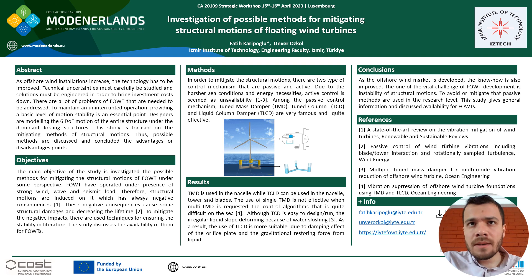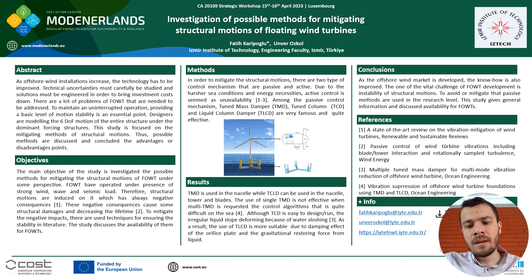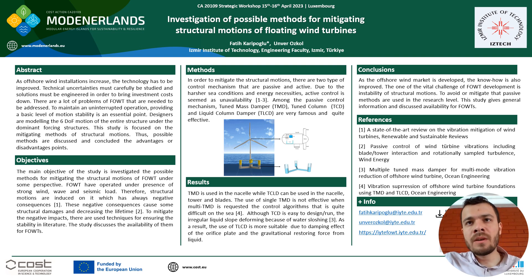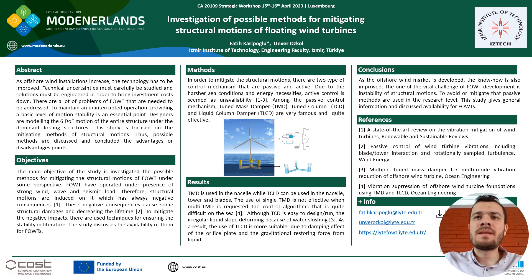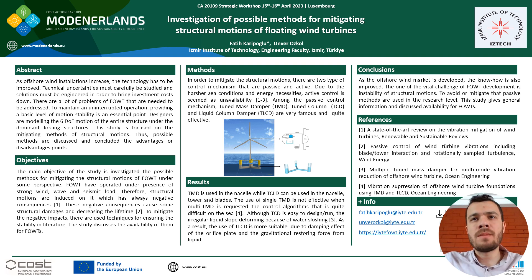When we look at the tuned mass damper, I think you can see this figure. The tuned mass damper consists of a mass that is connected to the main structure by a spring and a dashpot. Generally, when we would like to use the tuned mass damper, the single tuned mass damper is not effective on the floating wind turbine system. Therefore, we have to use the multi-tuned mass damper.